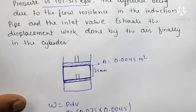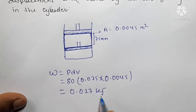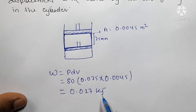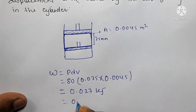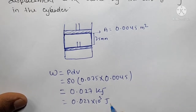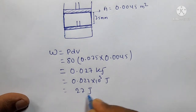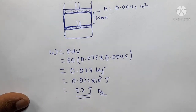So when we calculate using a calculator, work comes out to 0.027, which is in kilojoules. But since the book gives the answer in joules, multiply 0.027 by 10³, which gives 27 joules.